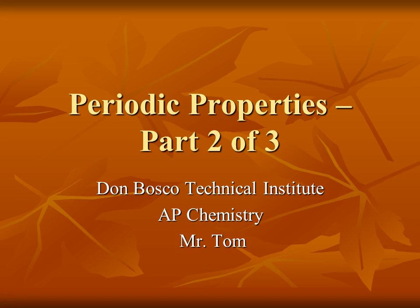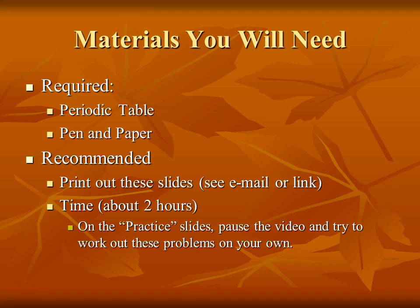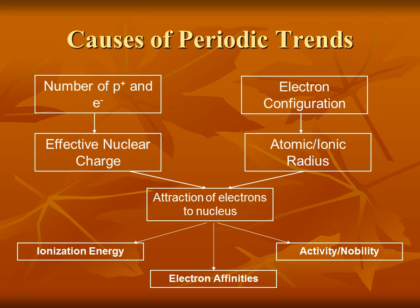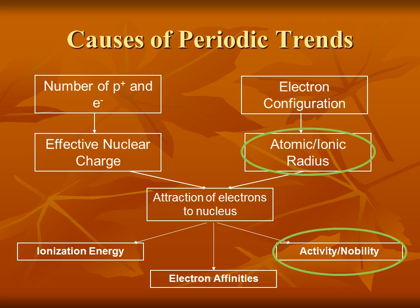Welcome to part two of the AP Chemistry presentation on periodic properties. You'll need the same materials you needed for the previous part. We're still following the same basic framework, linking the periodic properties back to electron configurations and effective nuclear charge. For this portion, we're going to be focusing on ionic radius, which we kind of skipped over in the last presentation, and how all of the things we've learned, including ionic radius, affect the activity or reactivity of an element.